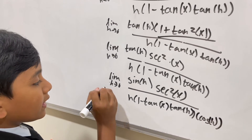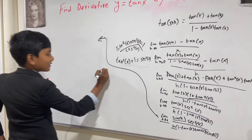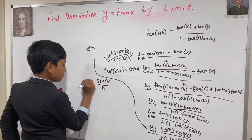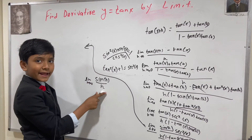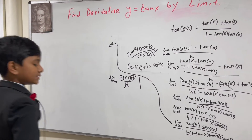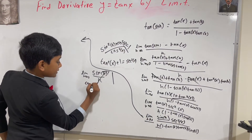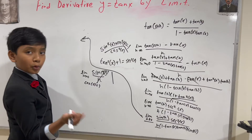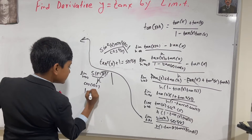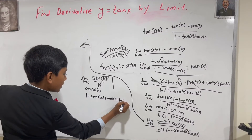Now we're going to take this limit. Realize that sin of h over h, as you take the limit as h approaches 0, approaches 1. So we can essentially eliminate that. Cosine of h as h approaches 0 is of course 1. And in the denominator, 1 minus tan of x times tan of h gives us 1 minus 0, which is 1. So everything is defined.